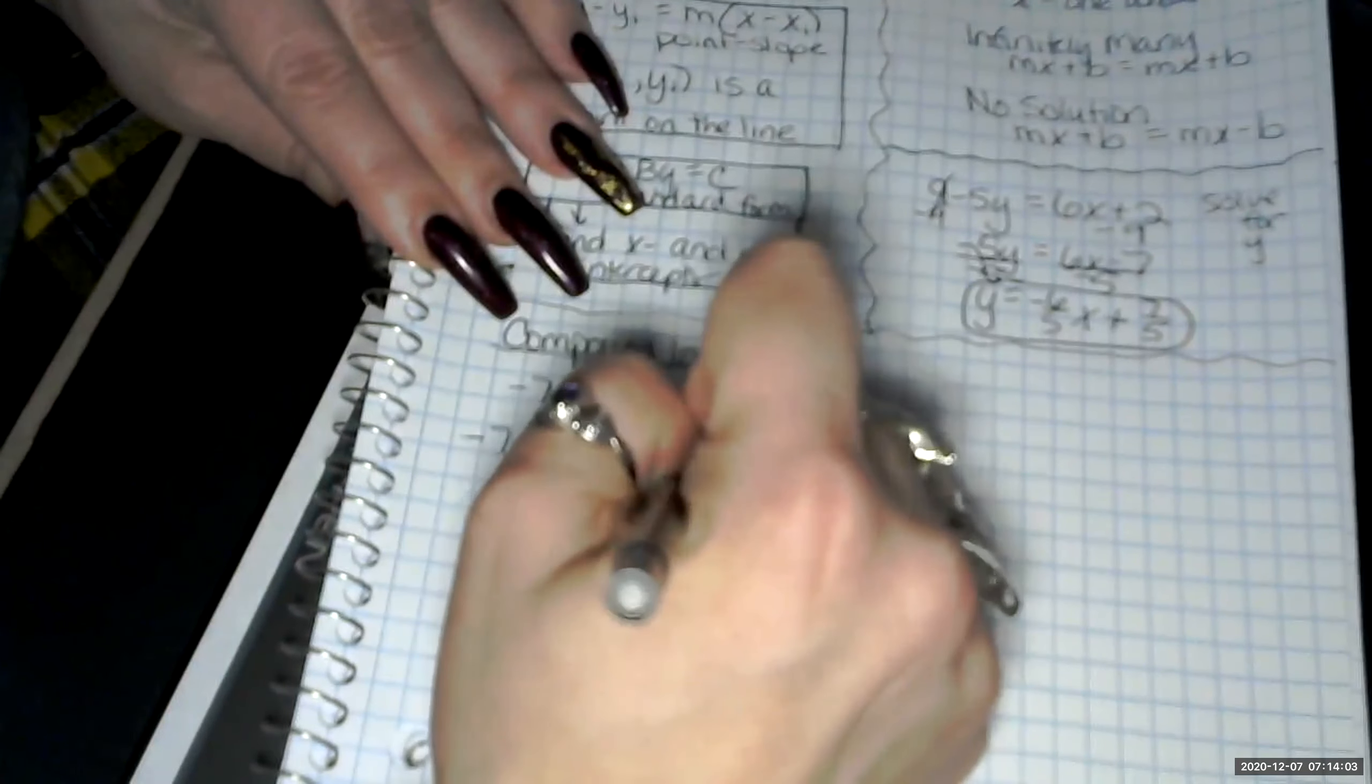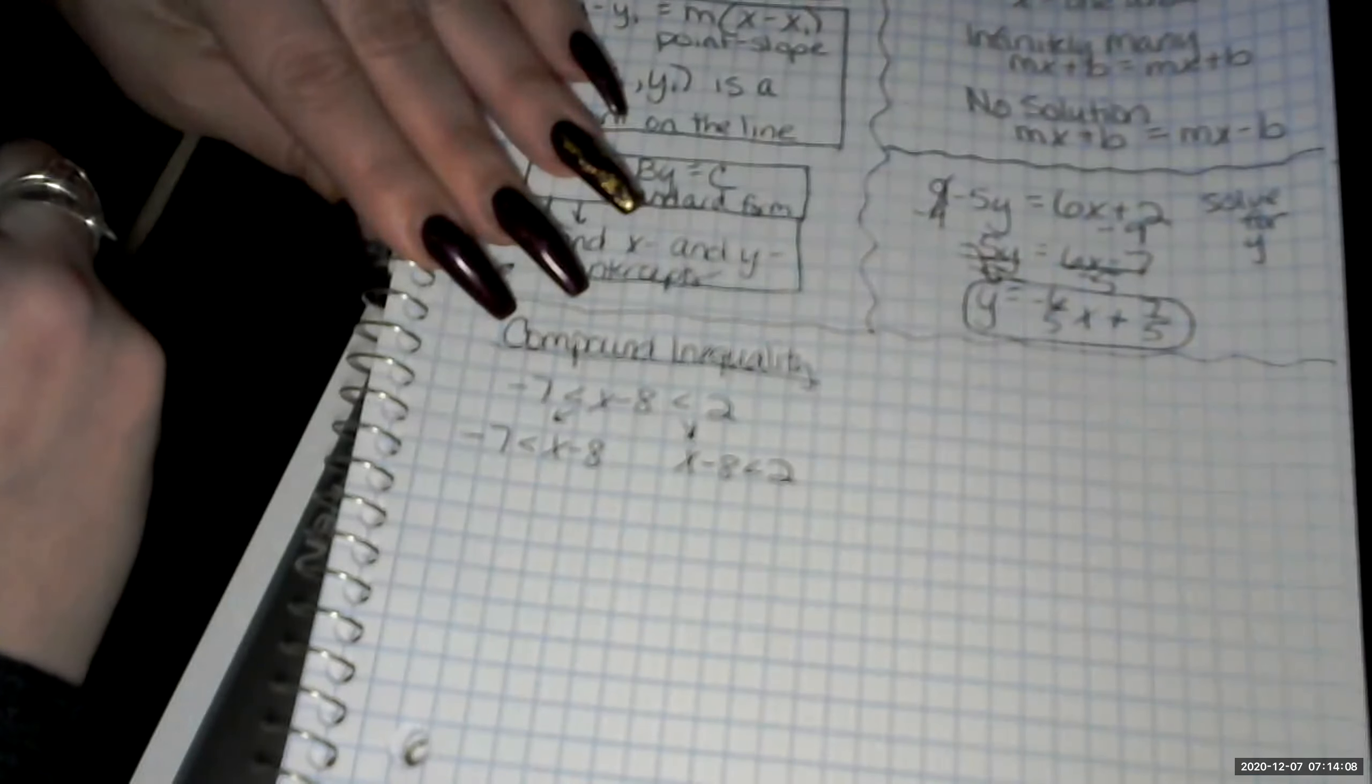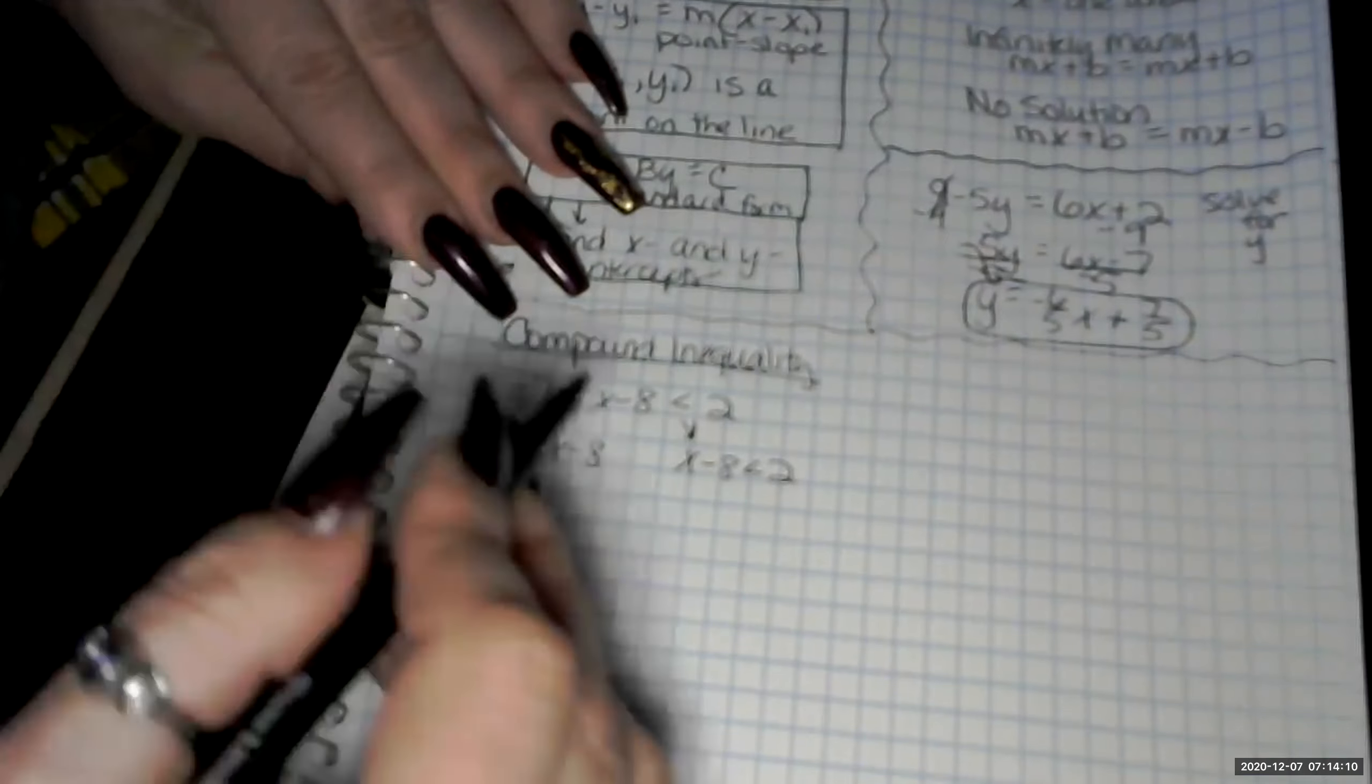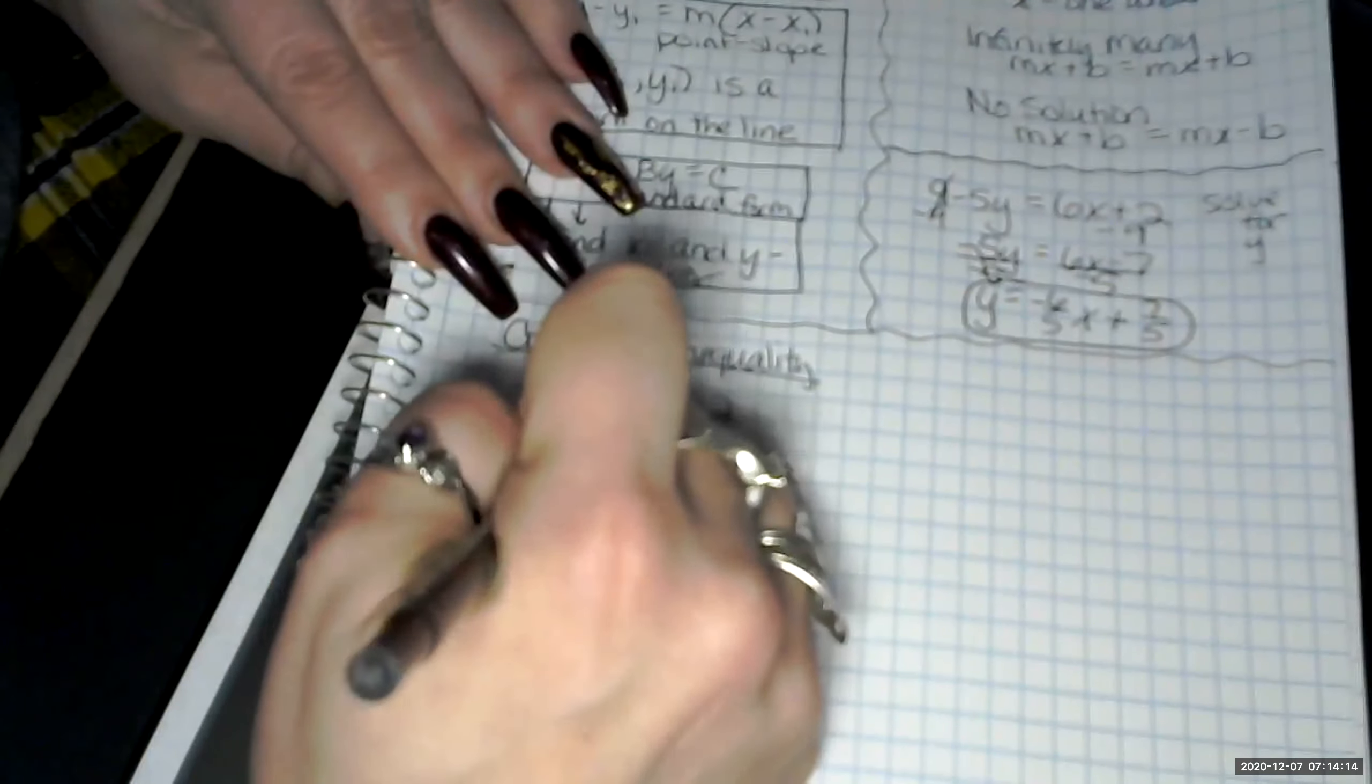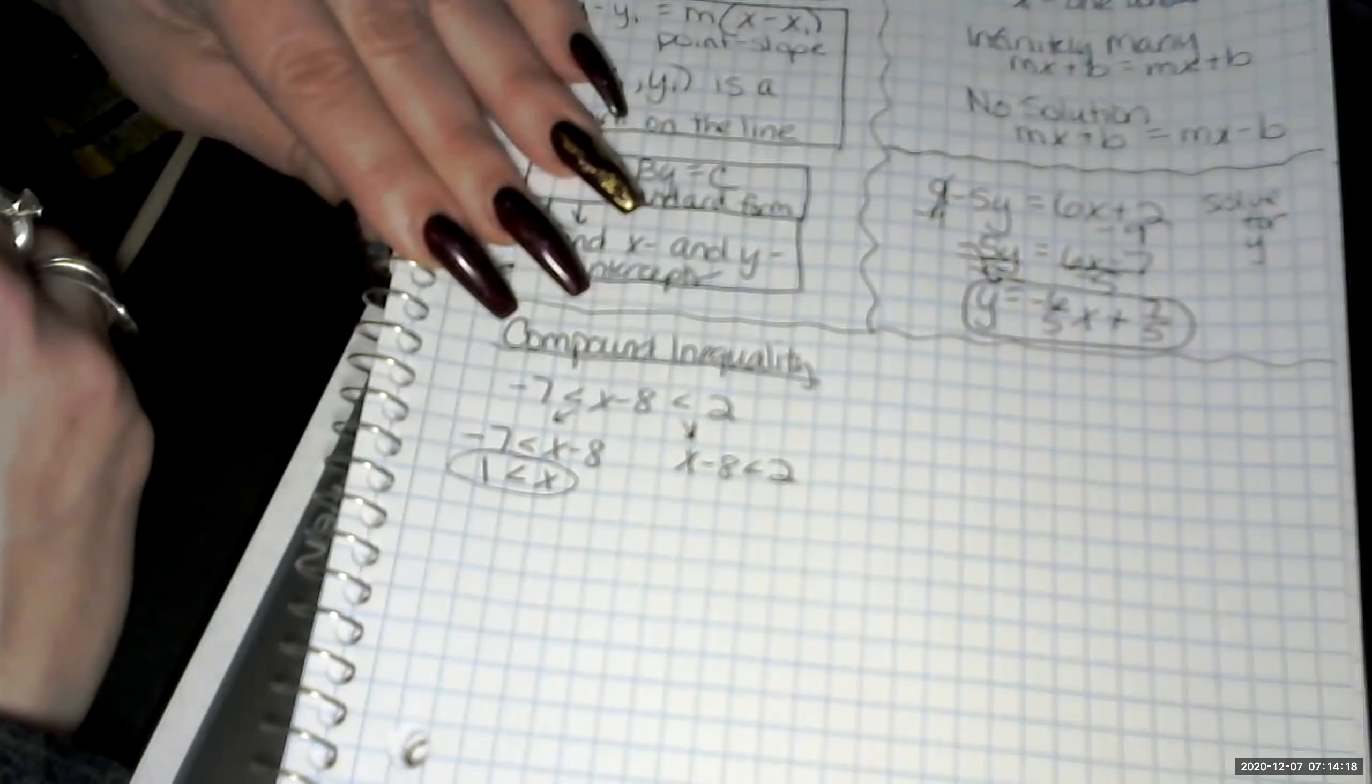This one, x minus 8 is less than 2. And then we add 8 to both sides. We got 1 is less than x for the first answer. Same as x is greater than 1.